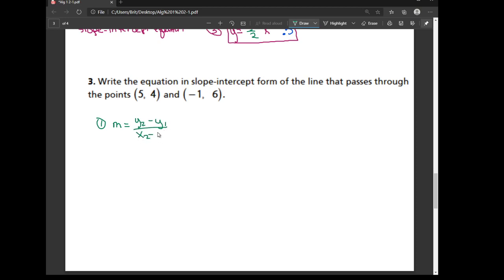So that means that I'm going to need to label my points as x1, y1, and x2, y2. So let's go ahead and let's plug those in. So y2 minus y1, I have 6 minus 4, divided by x2 minus x1, so negative 1 minus 5.